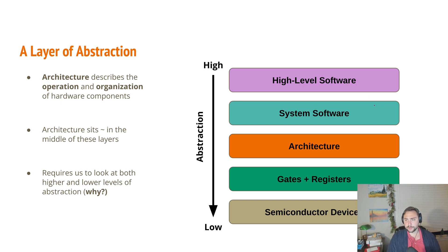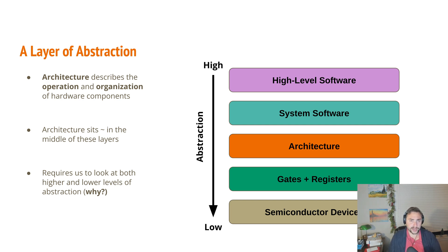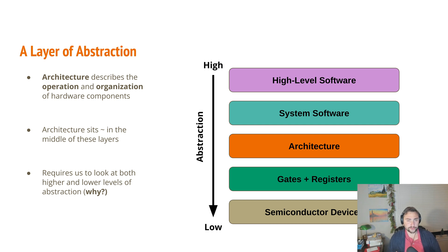Below our high-level software is our system software, and this software has to be much more in tune with how our hardware operates. Our system software includes things like compilers that we use to generate the instructions that we're going to execute for our high-level software, and also things like operating systems that we rely on for managing our hardware resources and abstracting these things away from high-level software.